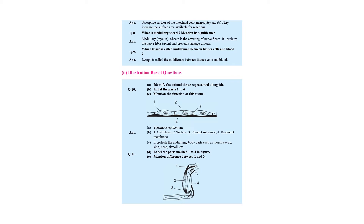Next is a figure-based question: identify the animal tissue represented alongside. The diagram shows squamous epithelium, labeled as: 1 — cytoplasm, 2 — nucleus, 3 — cement base joining two cells, 4 — basement membrane. Squamous epithelium protects the underlying body parts such as the mouth cavity, skin, nose, and alveoli.